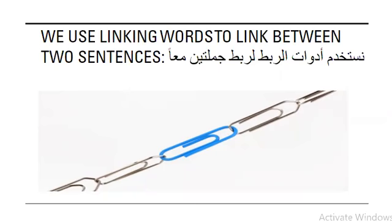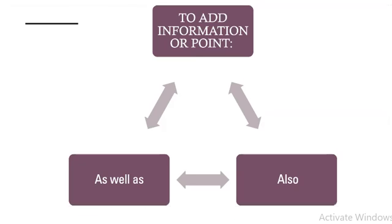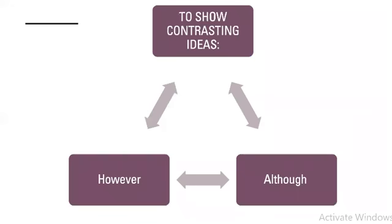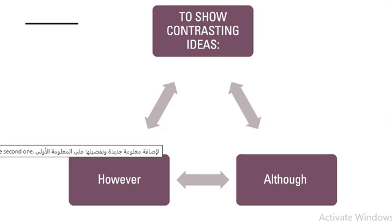Today we're going to focus on some linking words that are used to add information — اللي هما 'as well as' و 'also'. وحنركز كمان على الـ linking words that are used to show contrasting ideas — اللي هما 'however' and 'although'. تمام. Now, are you ready to start our video and dive in?